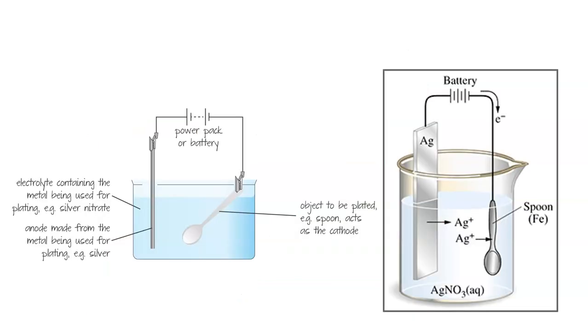This same process can be used to plate objects with silver. So silver plating, we can coat a cheaper metal such as iron with a silver coating using a silver electrode at the anode and silver nitrate solution, of course connected to a battery in order to supply the electric current.